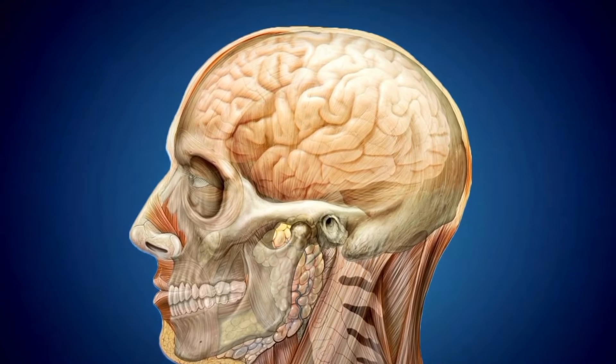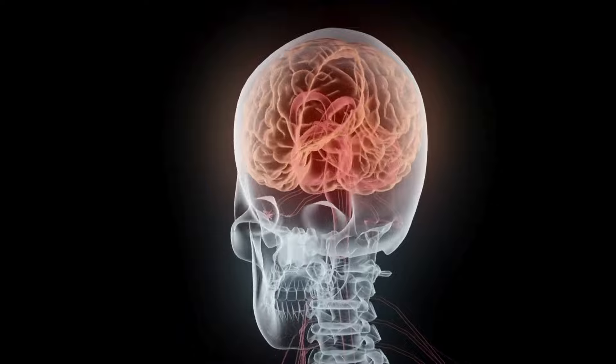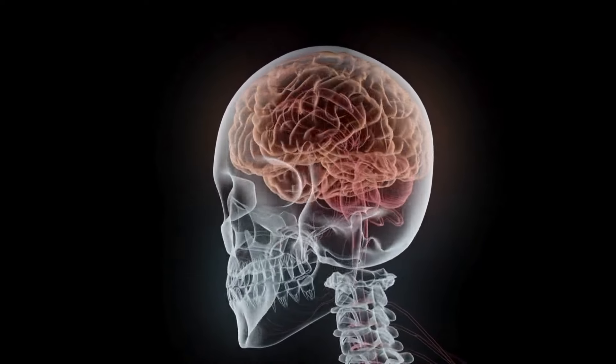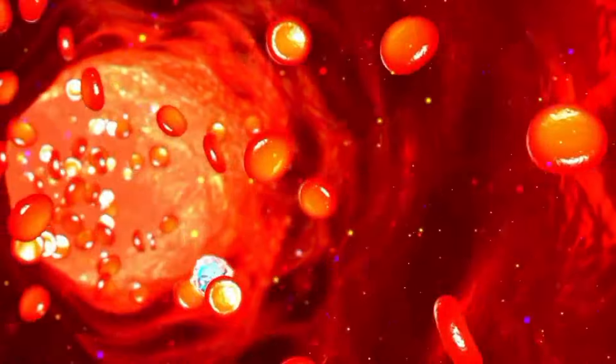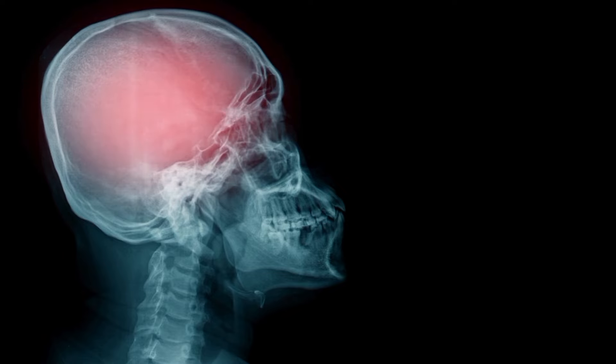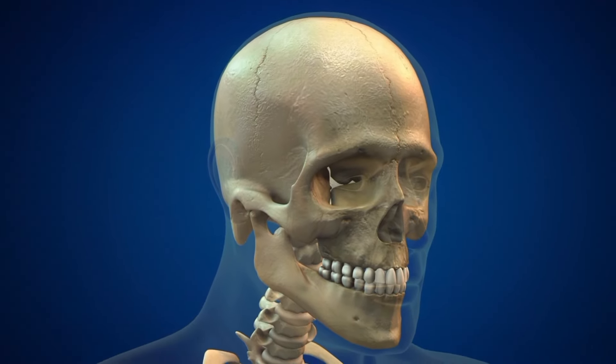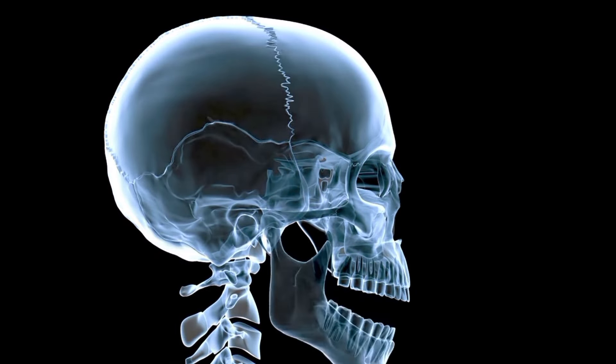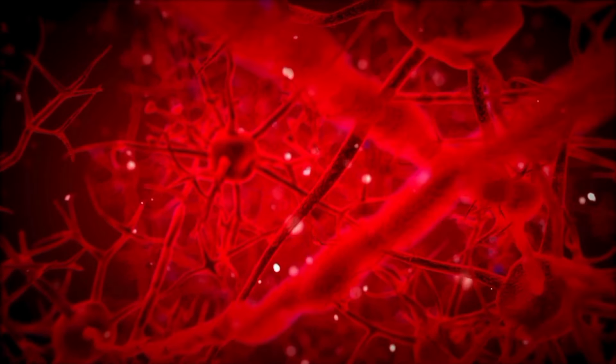Face Drooping. Face drooping, a hallmark sign of a stroke, manifests as asymmetry or weakness on one side of the face, typically causing it to sag or appear uneven. This distinctive alteration in facial expression results from nerve damage or muscle weakness caused by impaired blood flow to the brain. Observing for face drooping involves paying close attention to subtle changes in facial symmetry, such as difficulty smiling evenly or closing one eye completely. Even minor discrepancies in facial movement should not be disregarded, as they may indicate underlying neurological dysfunction.